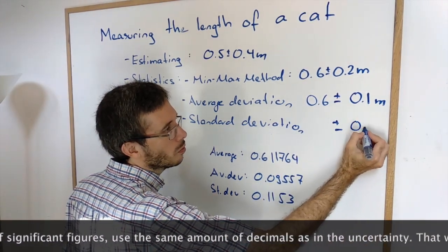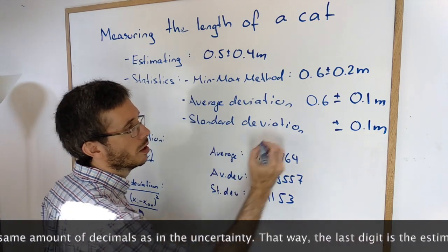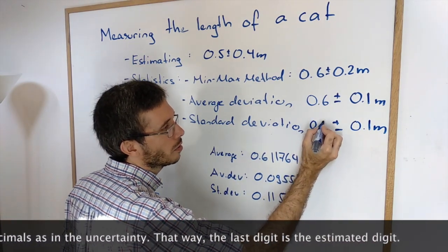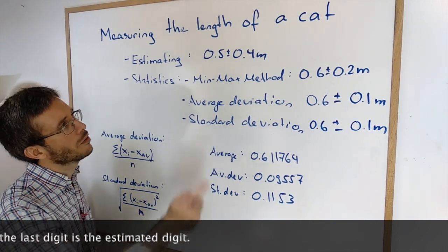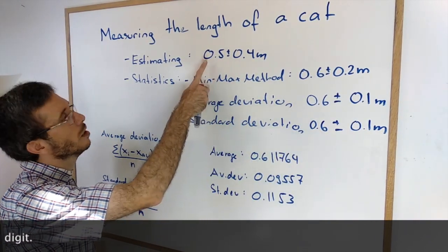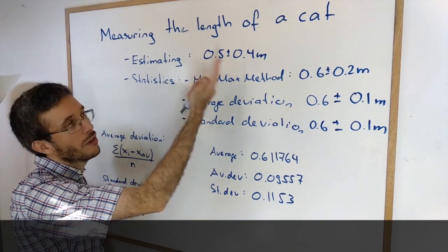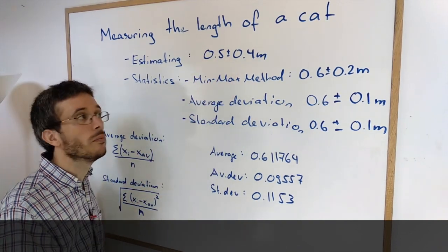And the average itself to 1 sig fig. So I have another value. So what do we get if we compare all methods here? When I did the estimation that was definitely the fastest because I only had to do one measurement. And I got a very high uncertainty because it was very conservative.